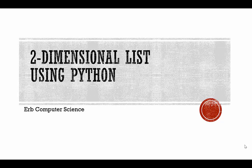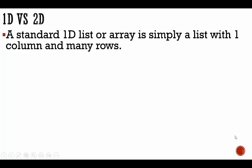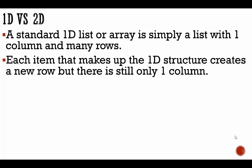In this video, we talk about how to build a two-dimensional list using Python. A standard 1D list or array is simply a list with one column and many rows. Each item that makes up the 1D structure creates a new row, but there is still only one column.